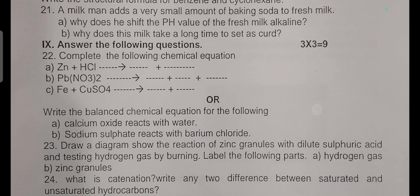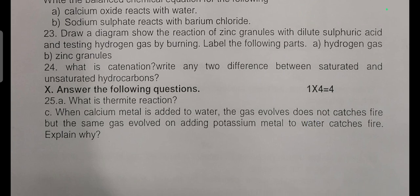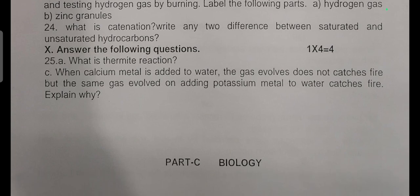A milkman adds a very small amount of baking soda to fresh milk. Why does he shift the pH value of fresh milk to alkaline? Why does this milk take a long time to set as curd? Three marks question: Complete the following chemical equations or write the balanced chemical equation. Calcium oxide reacts with water. Sodium sulfate reacts with barium chloride. Draw the diagram showing the reaction of zinc granules with dilute sulfuric acid and testing hydrogen gas by burning. Label the following parts: hydrogen gas and zinc granules. What is catenation? Write any two differences between saturated and unsaturated hydrocarbons. Four mark question: What is thermite reaction? When calcium metal is added to water, the gas evolved does not catch fire, but the same gas evolved on adding potassium metal to water catches fire. Explain why.